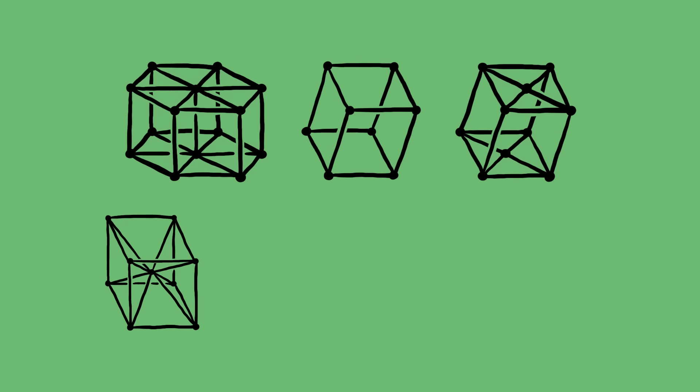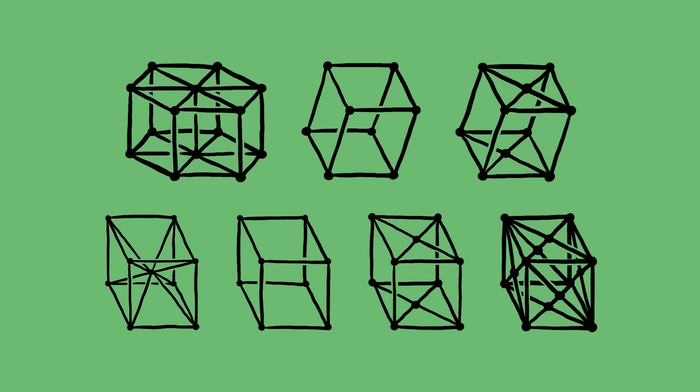When you consider every possible symmetry group with translational symmetry, you get what we call the space groups. There are 230 space groups in 3D, 219 if you don't count the ones that are mirror images of others.